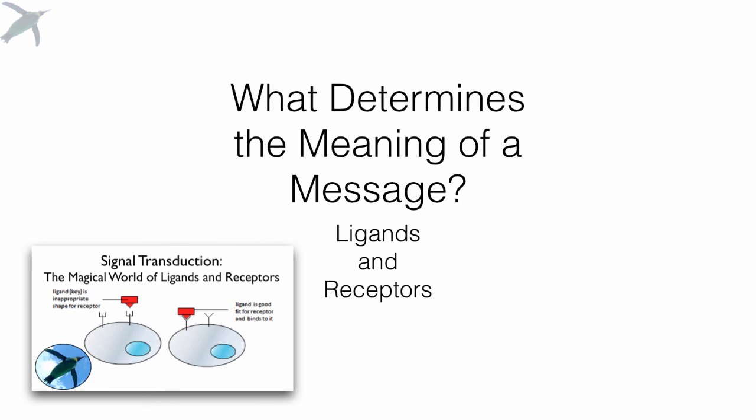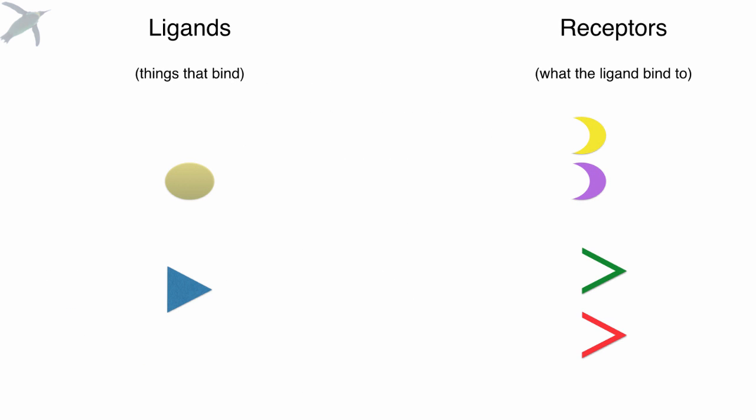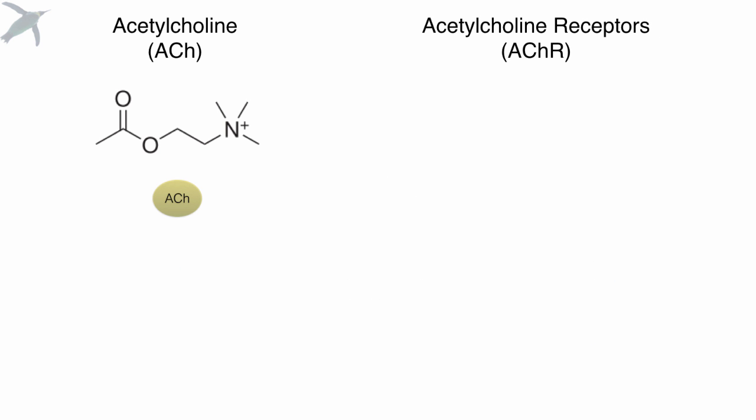And if you recall my video on signal transduction, what determines the meaning of a message is the ligand and the receptor that the ligand binds to — and this really is the key to understanding the autonomic nervous system. So we are going to be looking at the ligands, including acetylcholine. When you see a neuron that produces acetylcholine, or a receptor that acetylcholine binds to, we use the term cholinergic for that. We also have the ligands epinephrine and norepinephrine, which used to be called adrenaline and noradrenaline — and that's where we get the term adrenergic.